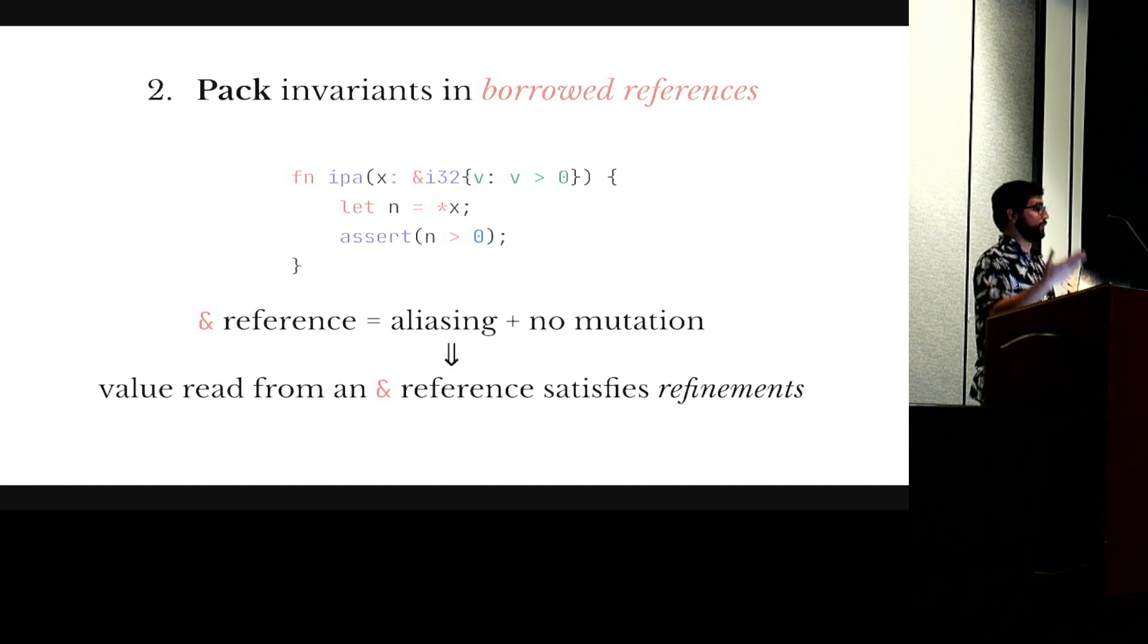So in this example I'm showing a function that takes a reference to a value that we guarantee is positive, and when I read from it I can be sure that the value would satisfy that refinement.